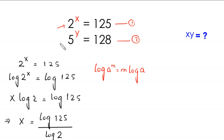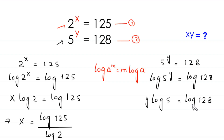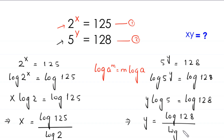In the same way, from equation number 2, we find the value of y. Equation 2 is 5 to the power y is equal to 128. Taking log of both sides gives log of 5 to the power y is equal to log of 128. By using the log property, this becomes y times log of 5 is equal to log of 128. Dividing both sides by log of 5, y is equal to log of 128 divided by log of 5.